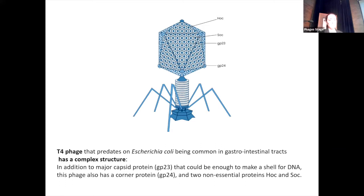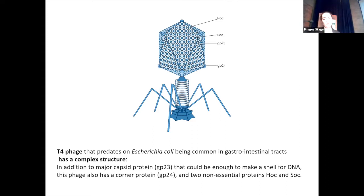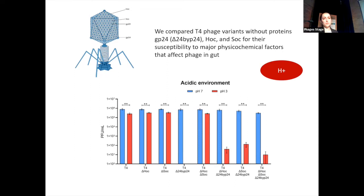T4 phage, which predates on Escherichia coli and is common in gastrointestinal tracts, has a complex structure. In addition to the major capsid protein GP23, which could be enough to make a shell for DNA, this phage also has a corner protein GP24, and two non-essential proteins, HOC and SOC. In our research, we compared T4 phage variants without these proteins — GP24, HOC, and SOC — and their different combinations, for their susceptibility to major physicochemical factors that affect phage in the gut.